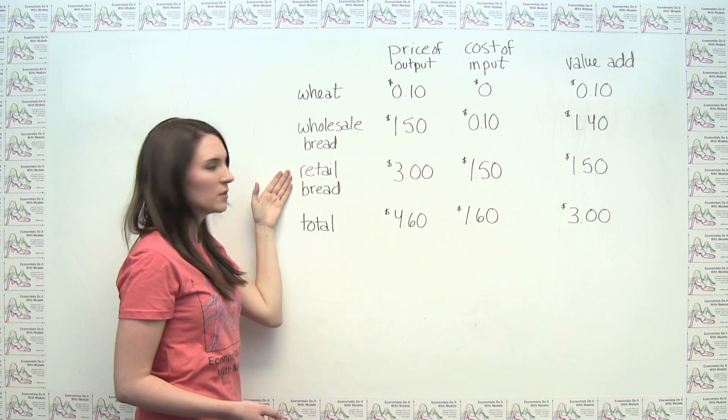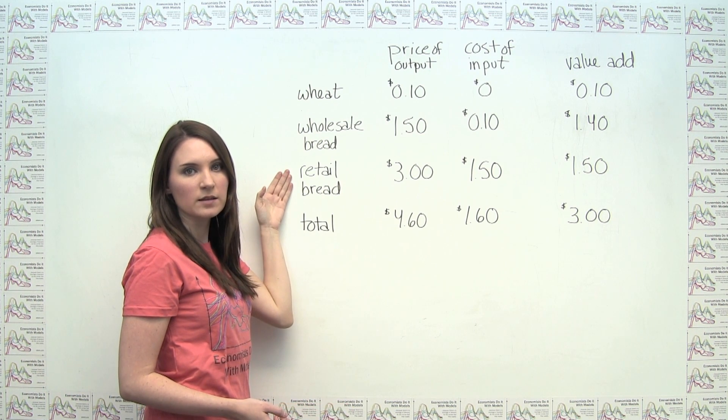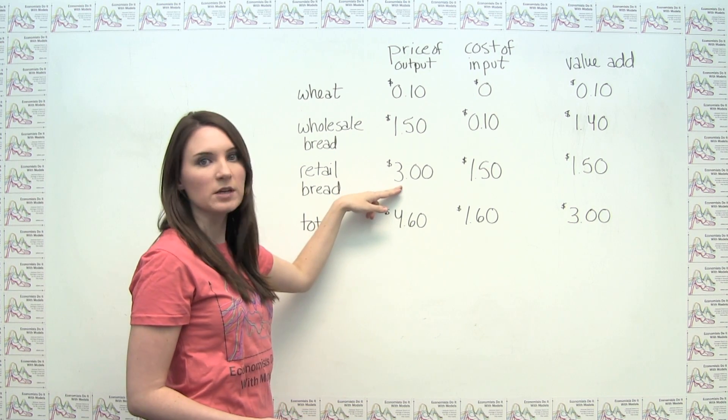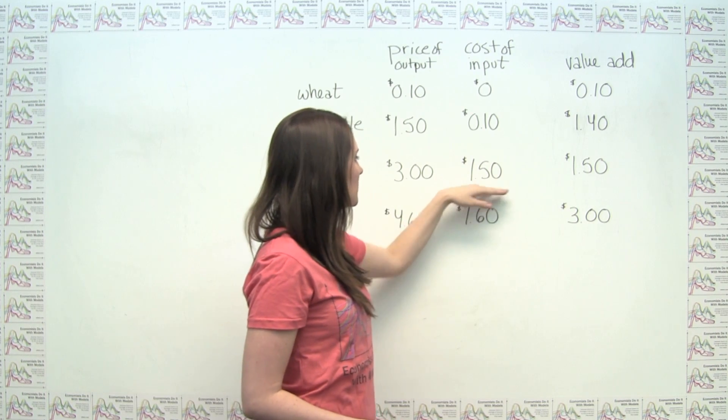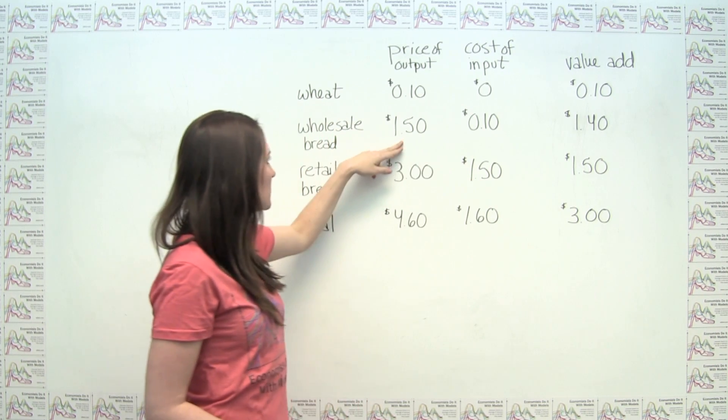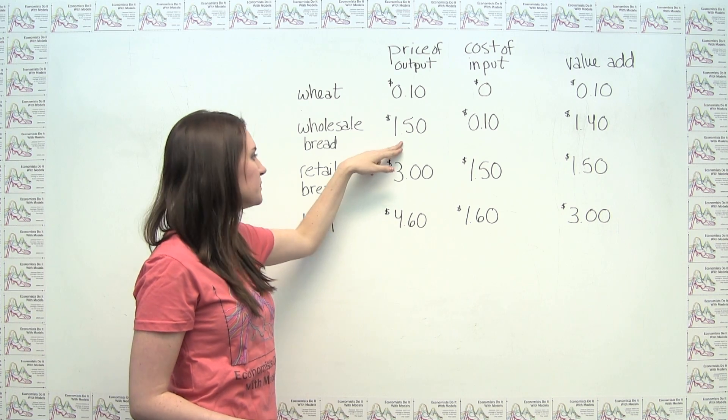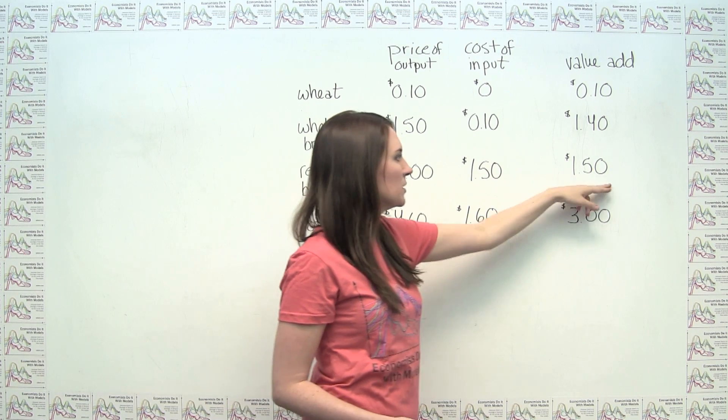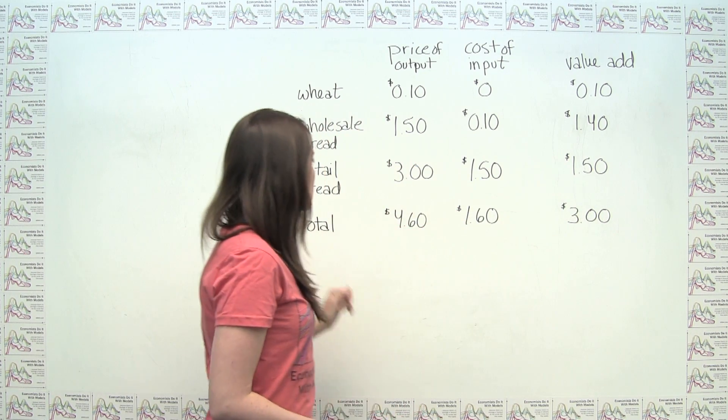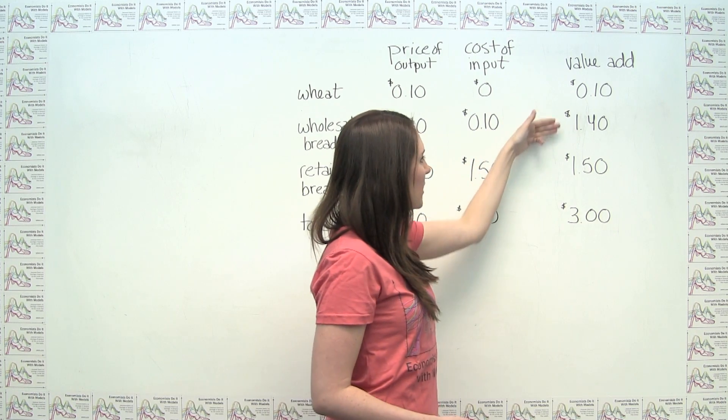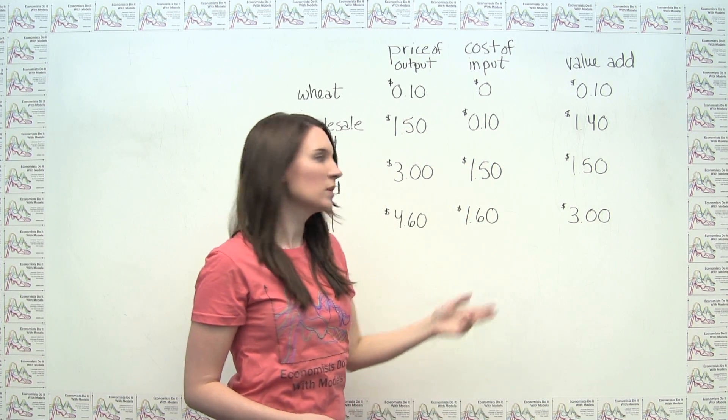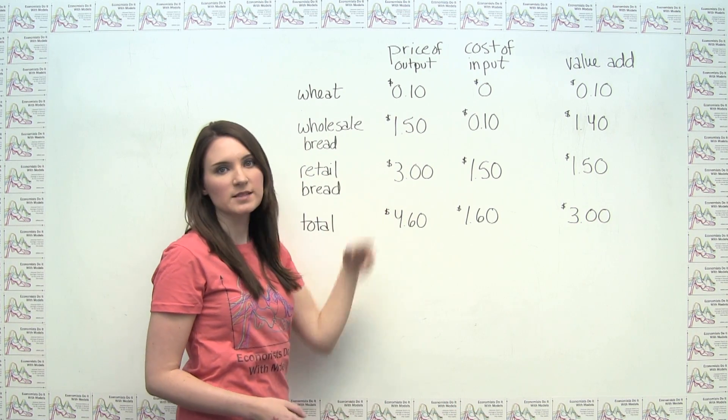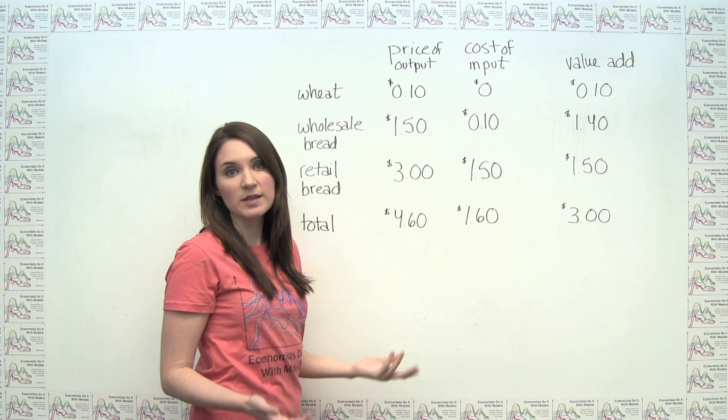At the last stage, we have the bread retailer who's selling the bread that he got wholesale to the end consumer. We can see that the price of his output, let's say, is $3.00. Well, the cost of his input is $1.50, because that was the wholesale price that he paid for the bread. So then his value add is just the price of his output minus the cost of his input, or $1.50. So you'll notice that if we add up all the value adds at each stage of the production process, we get a total of $3.00, which is in fact equal to the price of the final output. That shouldn't be terribly surprising to you.